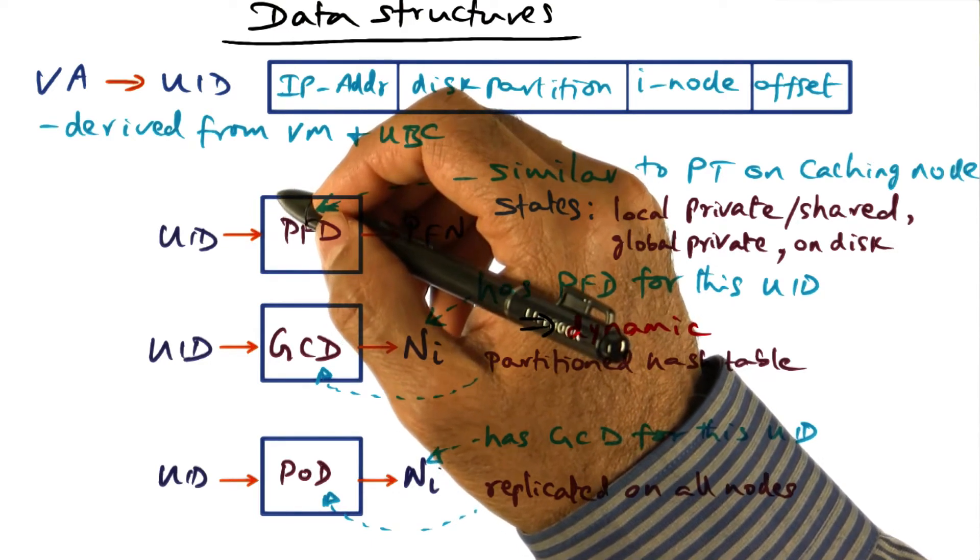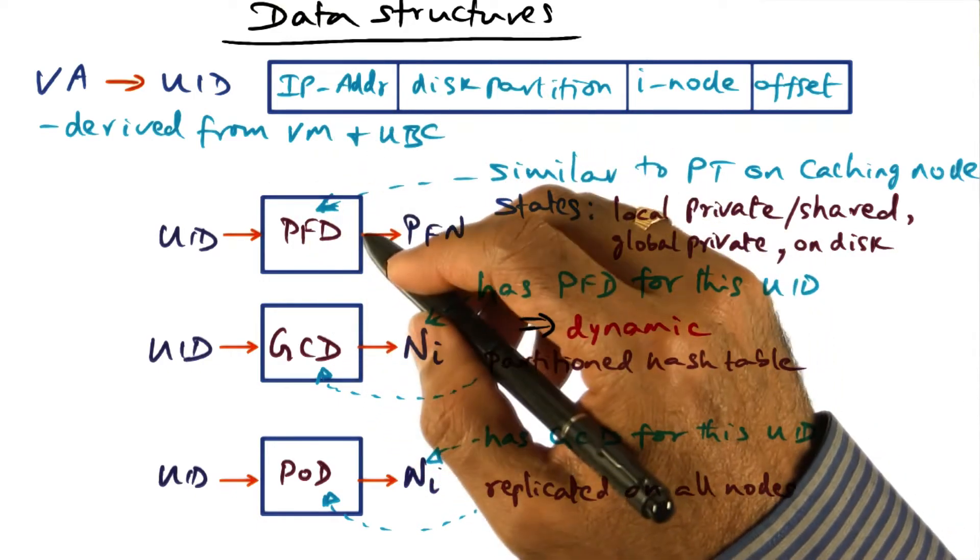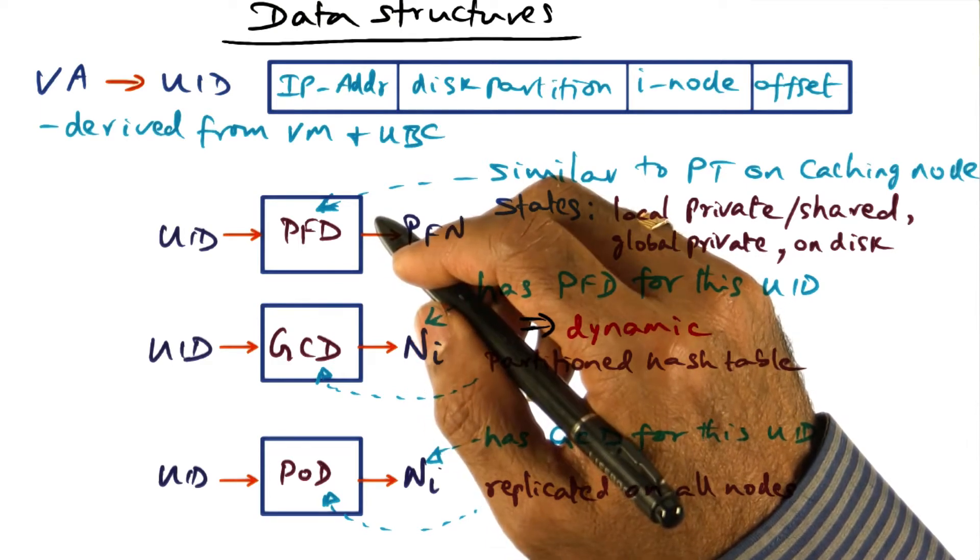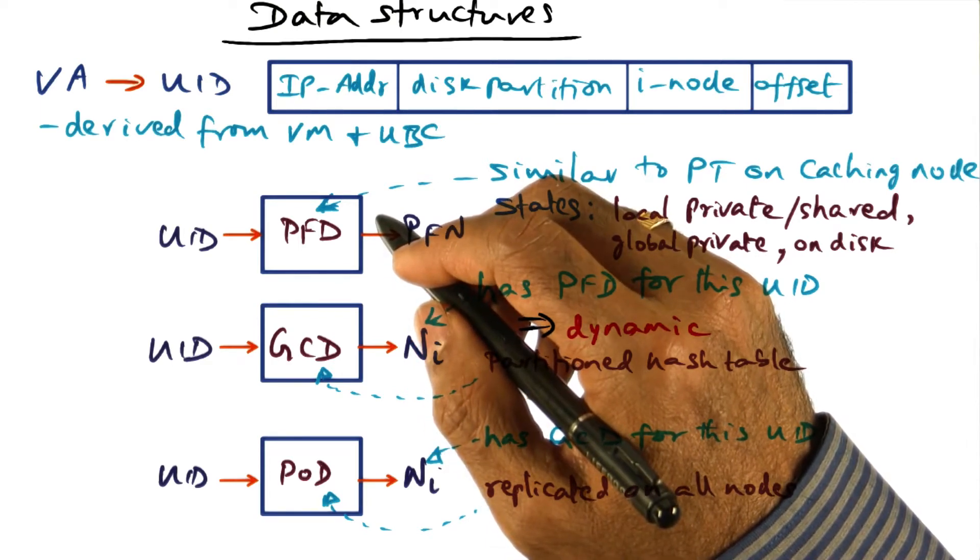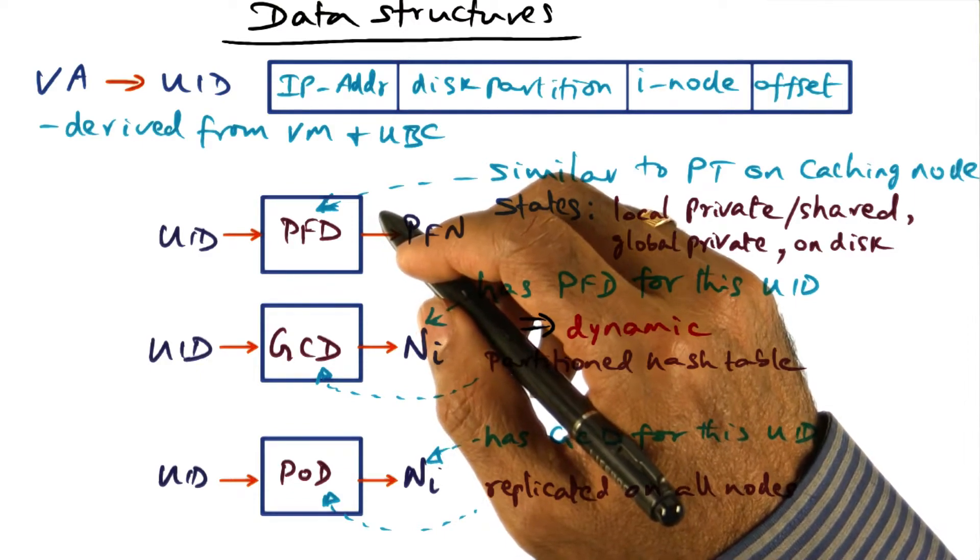So what we want to do is distribute this management function also. Just like the age management, we did not want to concentrate it on a single node. We want to distribute the management of giving this mapping between UID and which node has the PFD that can tell me information about the missing page.